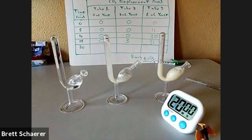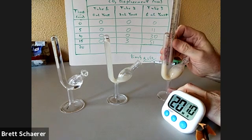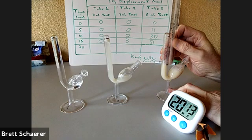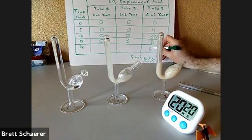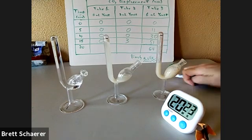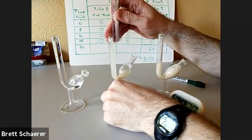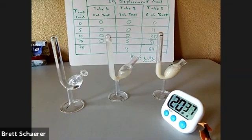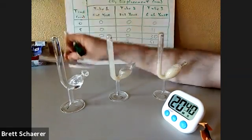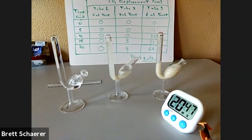Okay, we are now ready to take the last of the data at 20 minutes. We will again start with tube three — we'll measure that at 64 millimeters. And then for tube two, that looks like about nine millimeters. And tube one — I don't even really need the ruler, but it's still at zero. And there is our data.